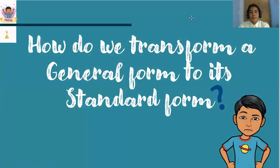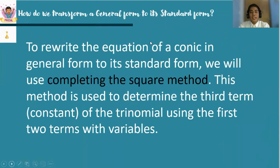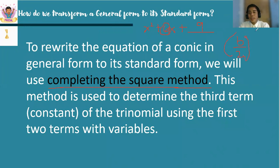To rewrite the equation of a conic from general form to standard form, we use the method of completing the square. For example, given x squared plus 6x, we get half of the coefficient of x — that is 6 divided by 2, which equals 3 — and then square it to get 9. The formula is (b/2) squared. Getting the half and squaring the answer is what we call completing the square.